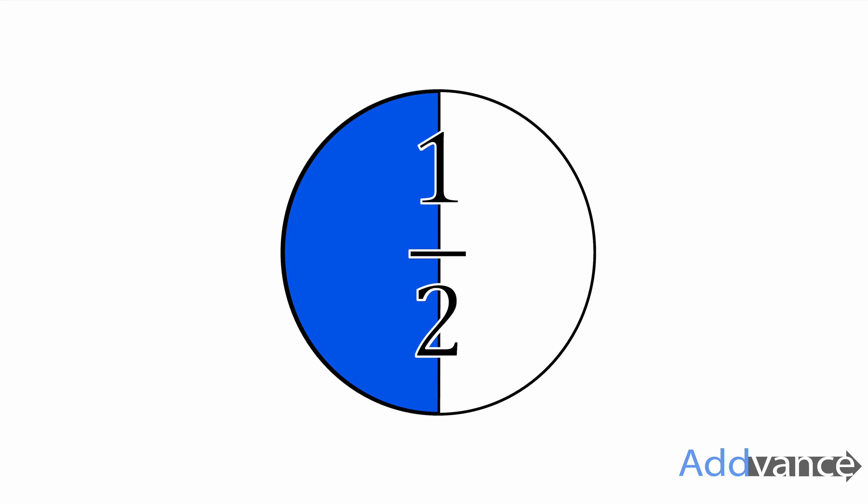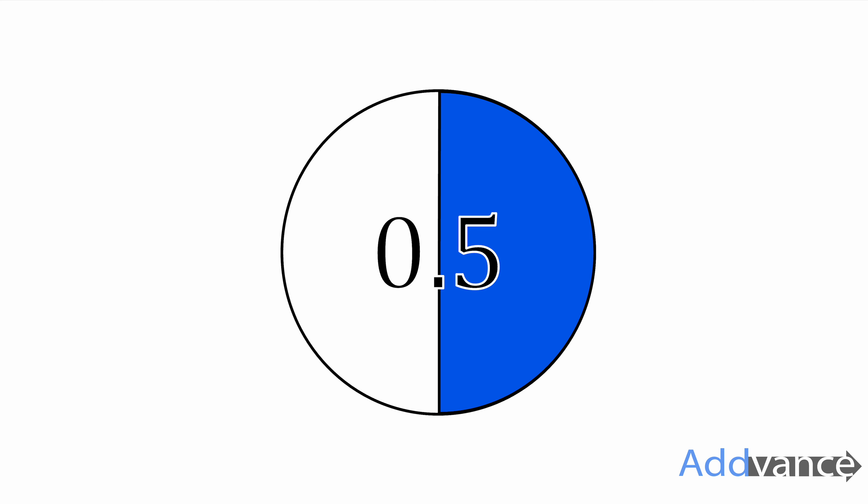Here is a fraction, one-half, and you should know that's the same as 0.5 and also the same as 50%. So a half, 0.5, and 50% are all the same thing. There are three separate ways of representing the same value.